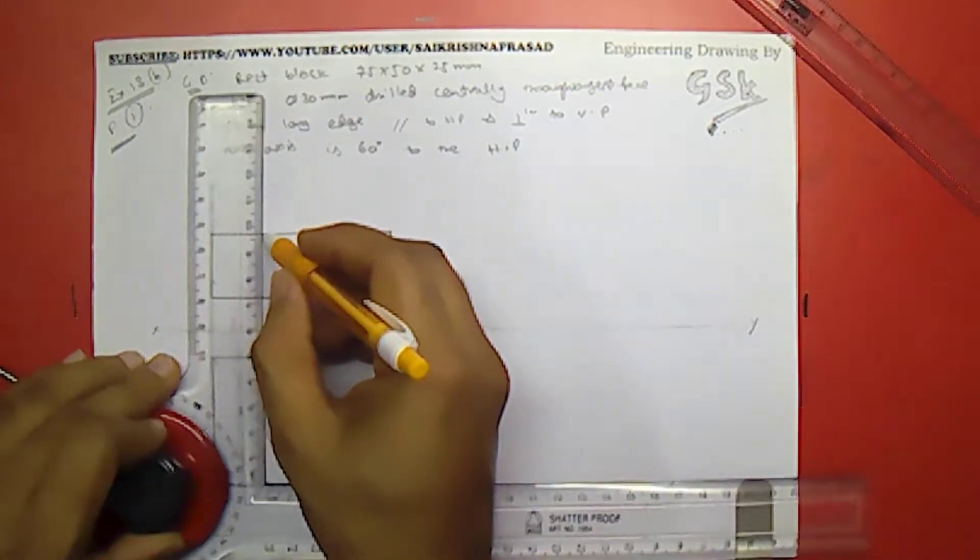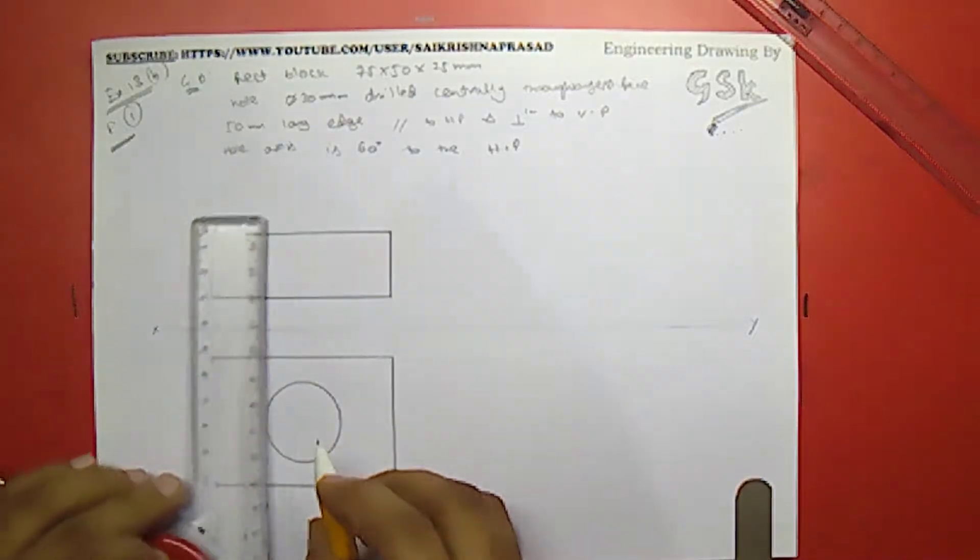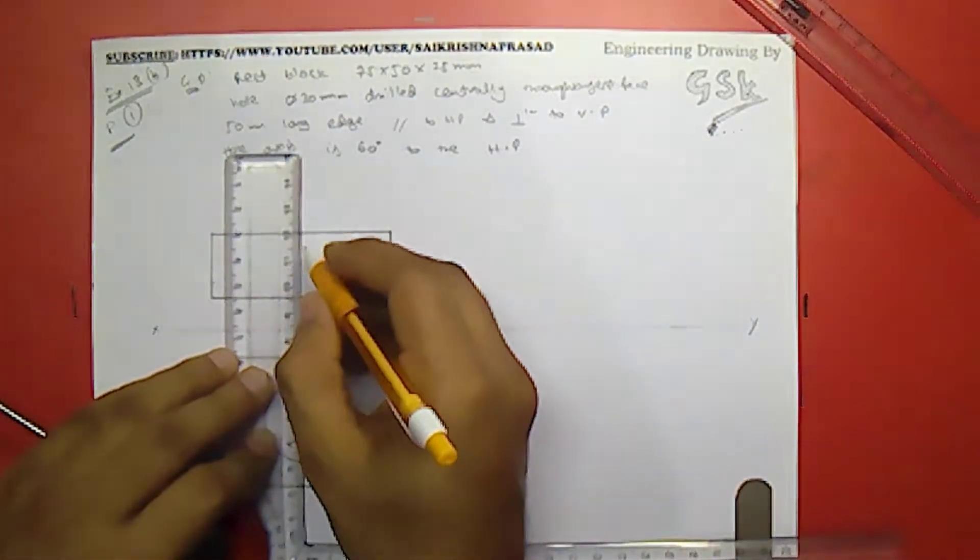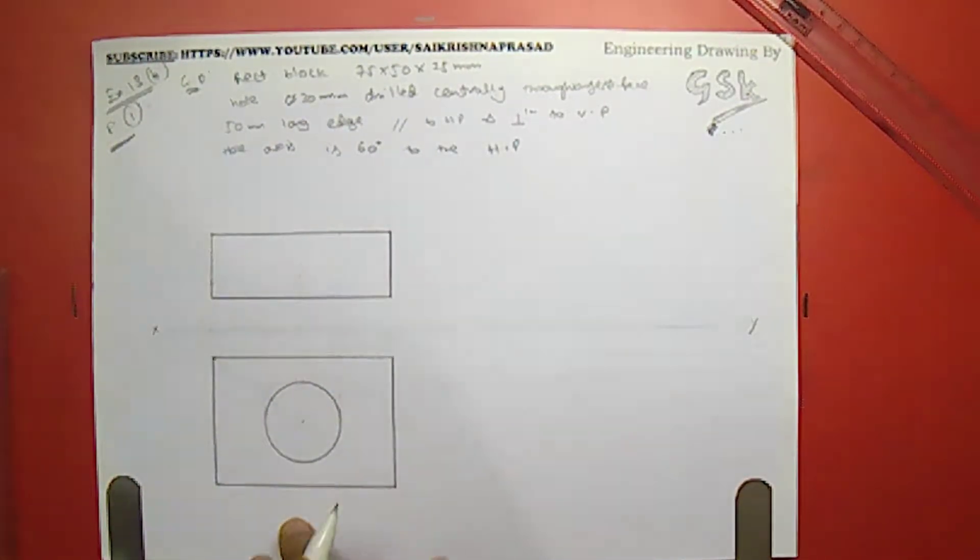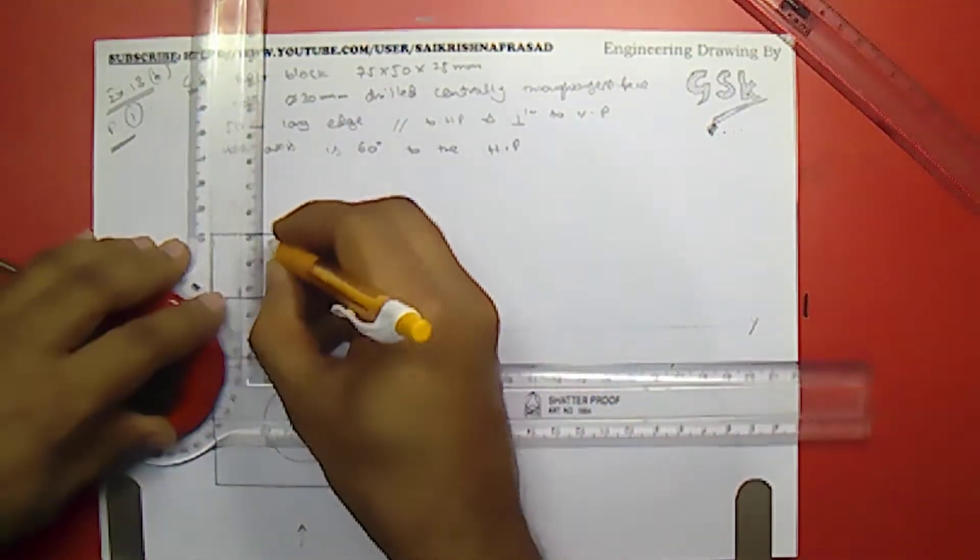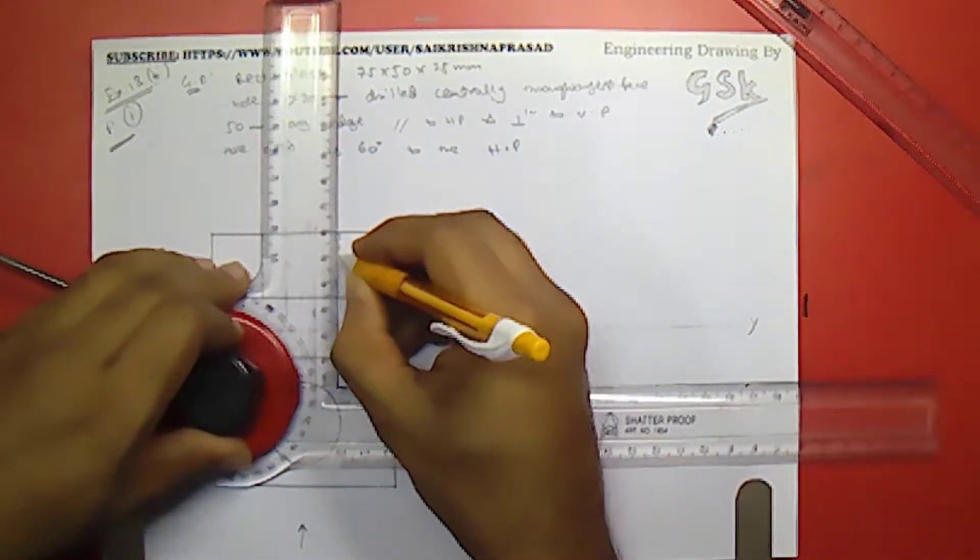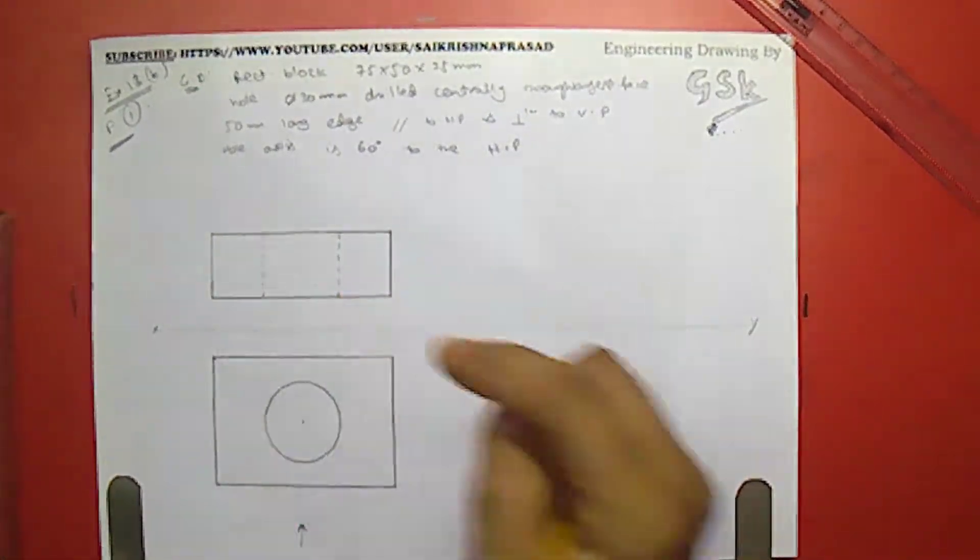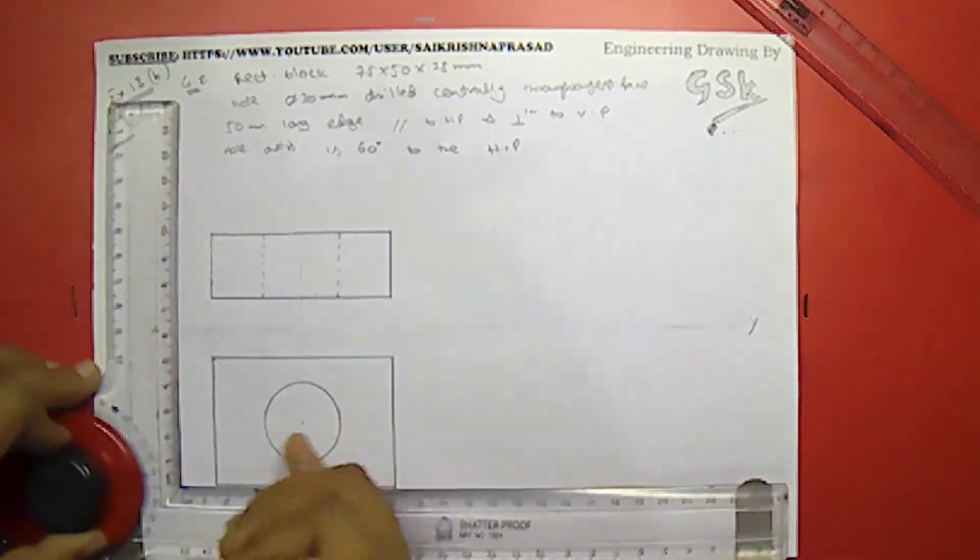So I will be projecting this circle over here. And circle has an axis. Now as we are looking in this direction, we can see this whole surface, but we can't see this hole. So for that I will be drawing hidden lines over there.